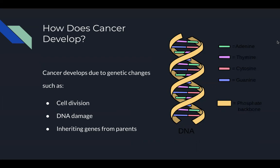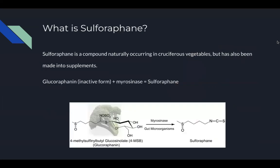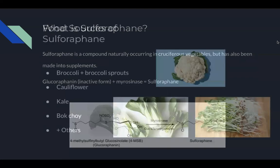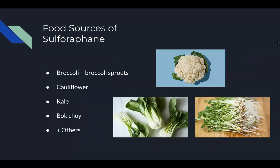Cancer can also be encoded in genes that are passed down from our parents. What is sulforaphane? Sulforaphane is a naturally occurring compound that is mainly found in cruciferous vegetables. There are also supplements available that have varying amounts of the compound along with others that may improve its bioavailability. Sulforaphane's inactive form is a compound called glucoraphanin. Myrosinase is another compound that activates glucoraphanin to become the active form of sulforaphane. Sulforaphane is available in high amounts in cruciferous vegetables such as broccoli, cauliflower, kale, bok choy, and others. Broccoli sprouts are also very high in sulforaphane and are widely used in supplements.